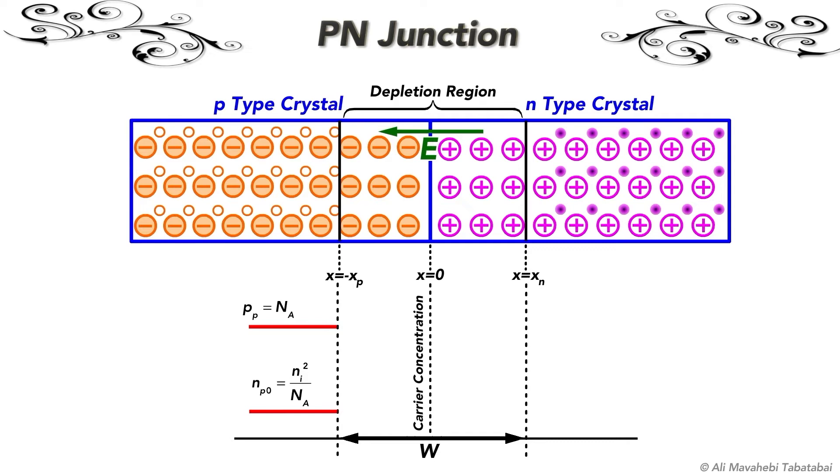For the n-side, I use subscript N. So in the n-side, the concentration of electrons is Nd, which depends on the donor atoms, and the concentration of holes is indicated by p subscript N0.